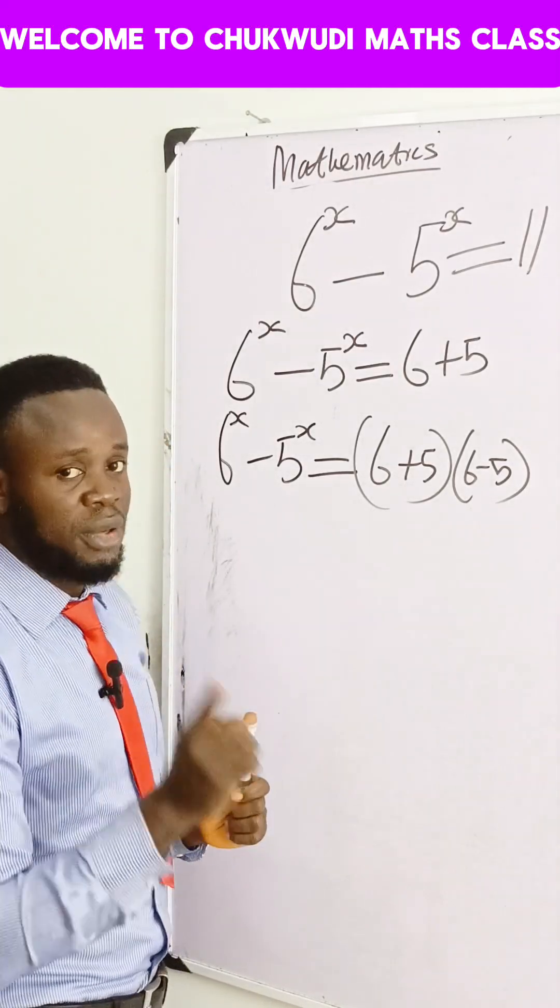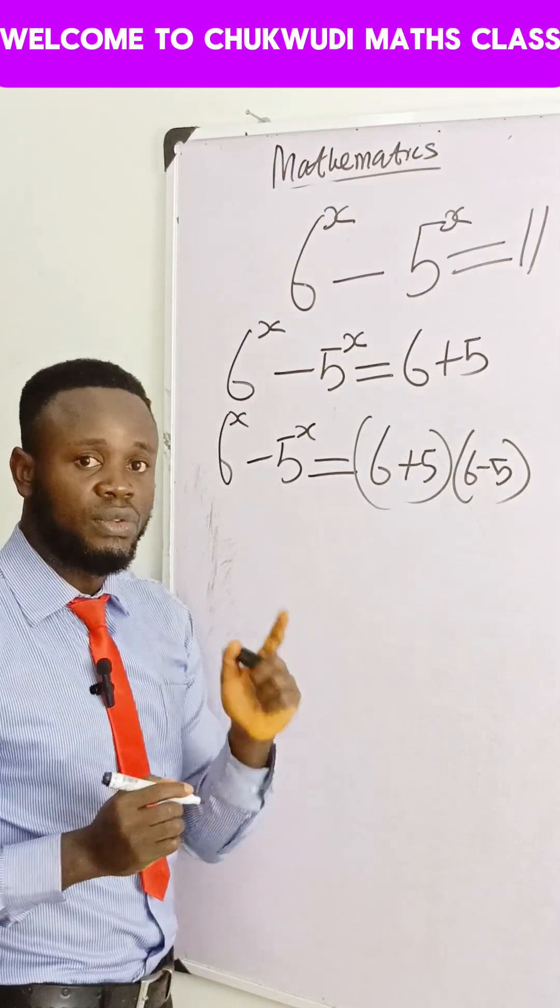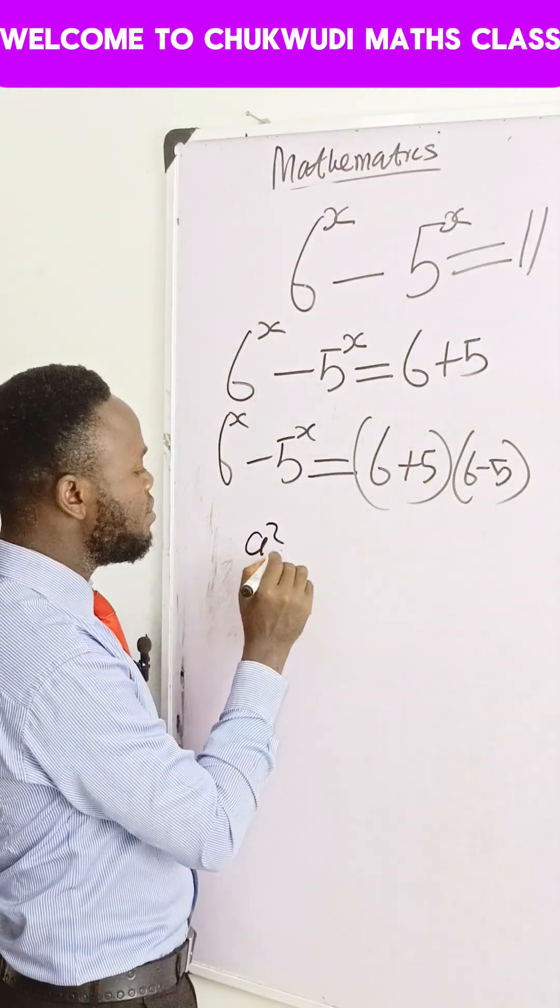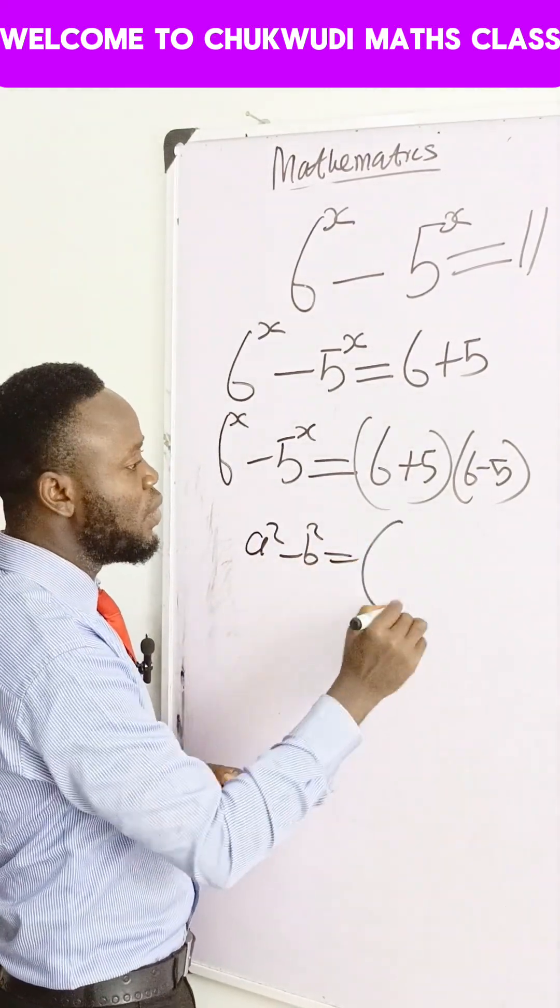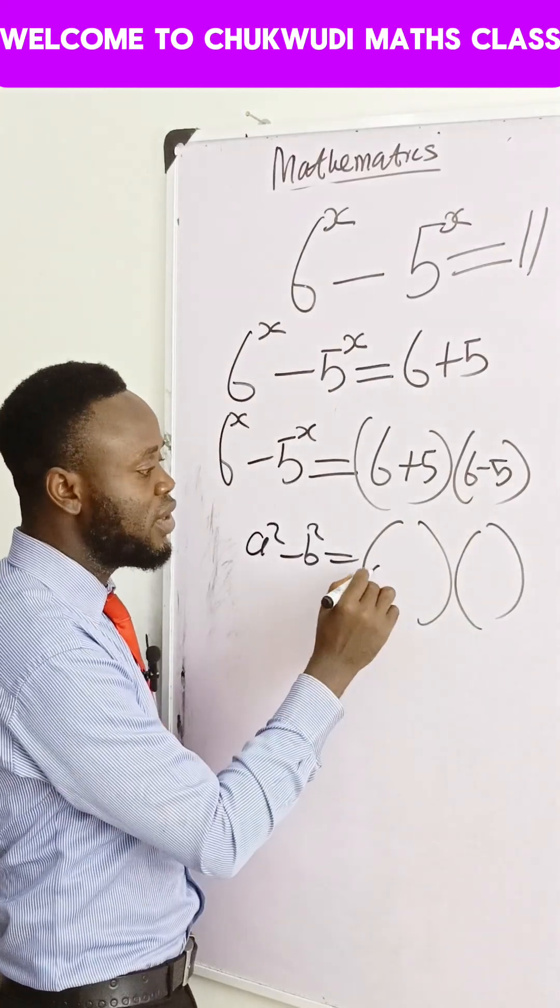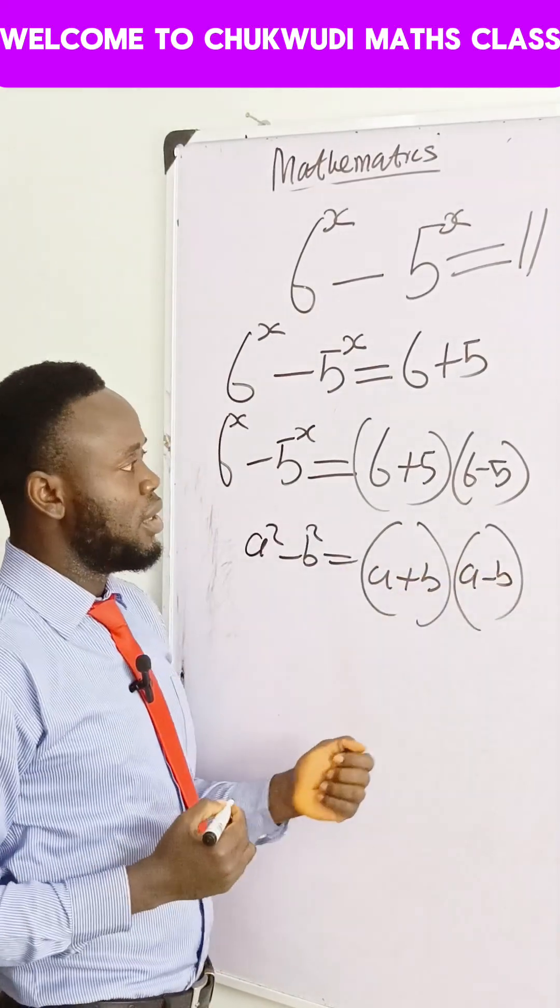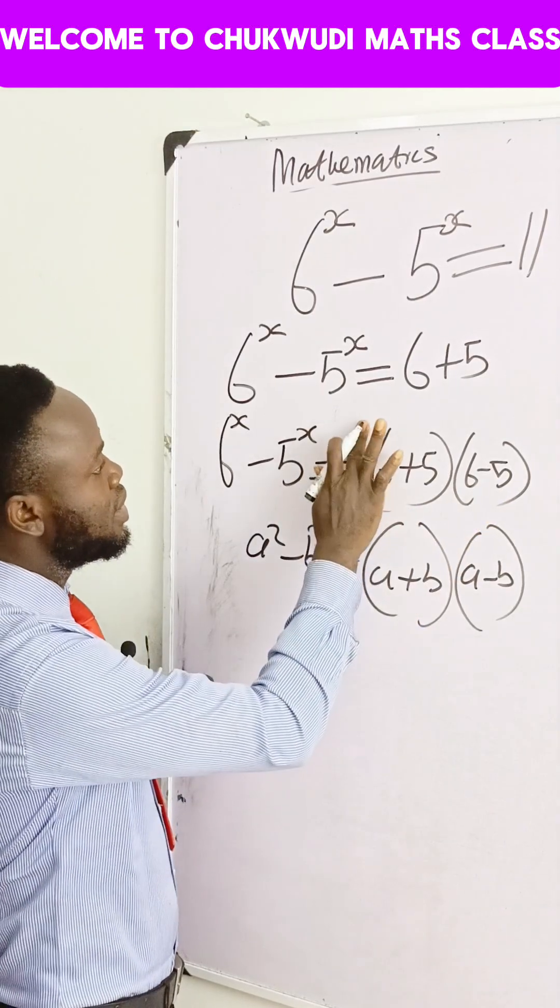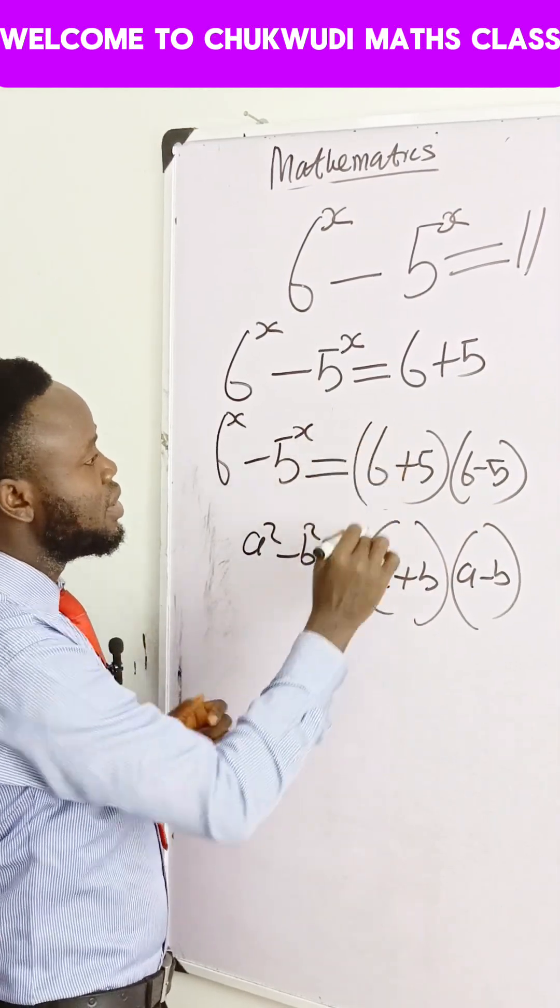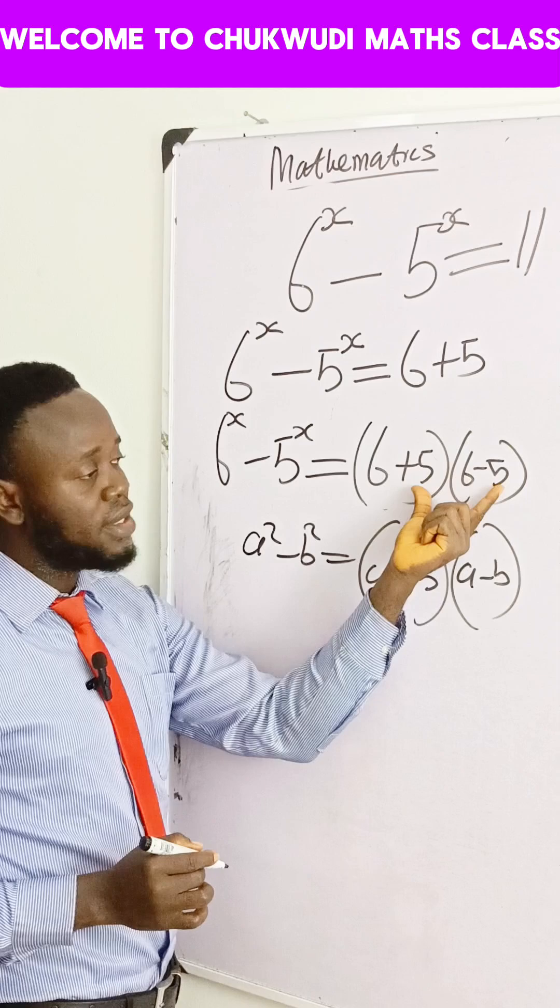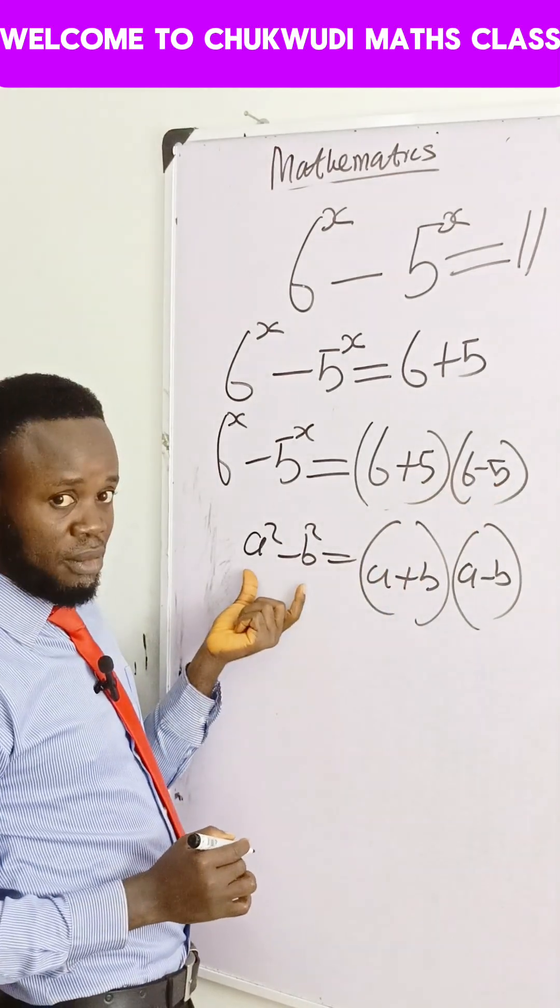Why did we do this? Because from difference of two squares, a squared minus b squared, you have something of this nature. From difference of two squares, a plus b times a minus b - that's how we do this. So if that is the case, it means we can express this one in this form.